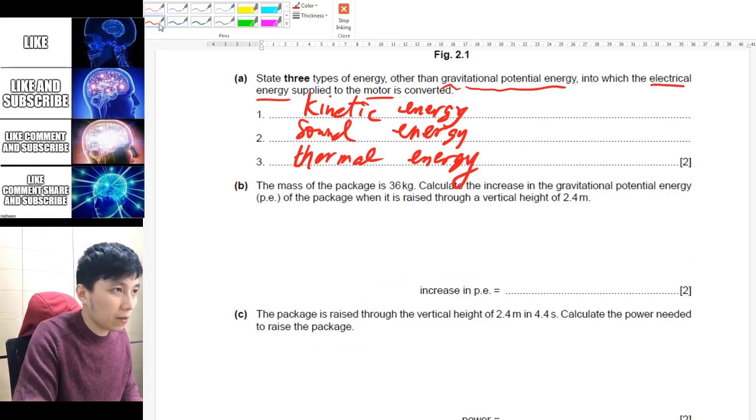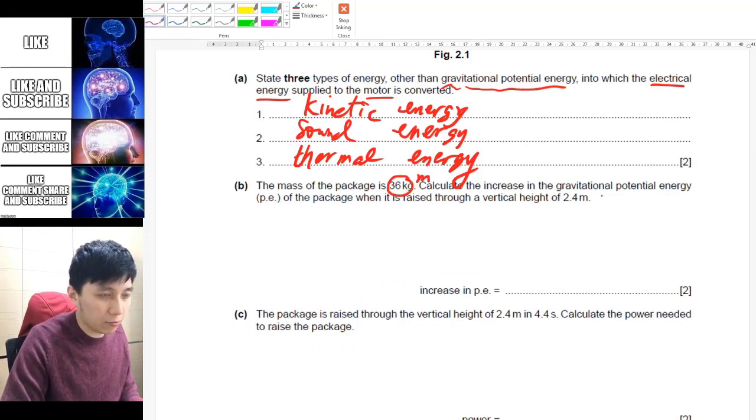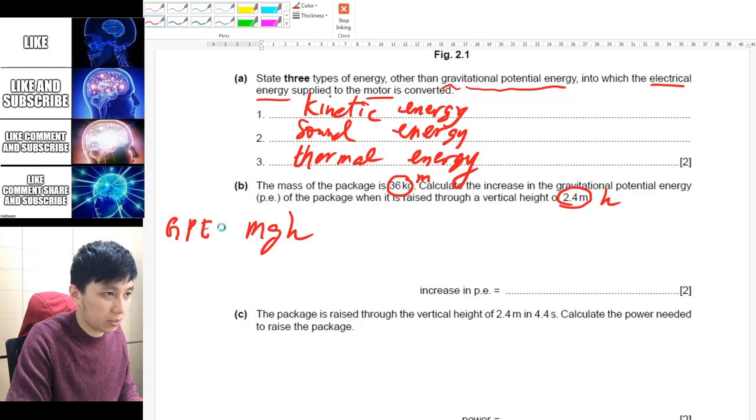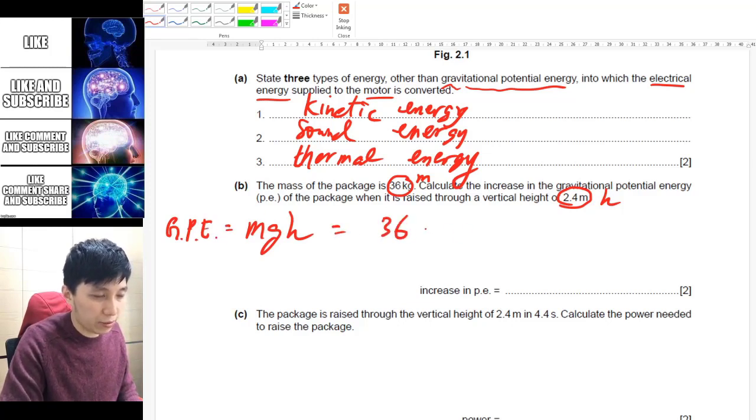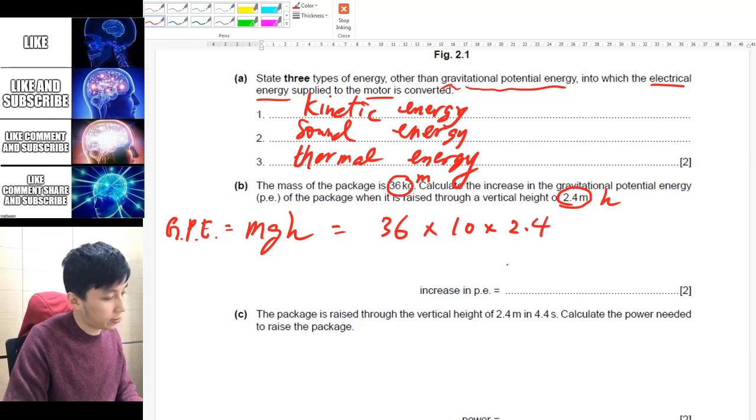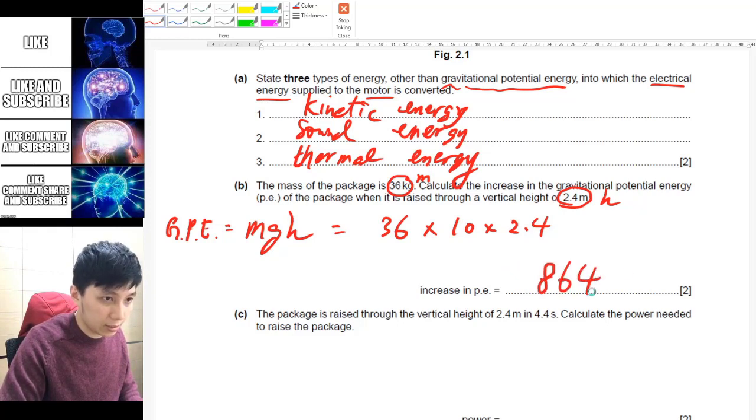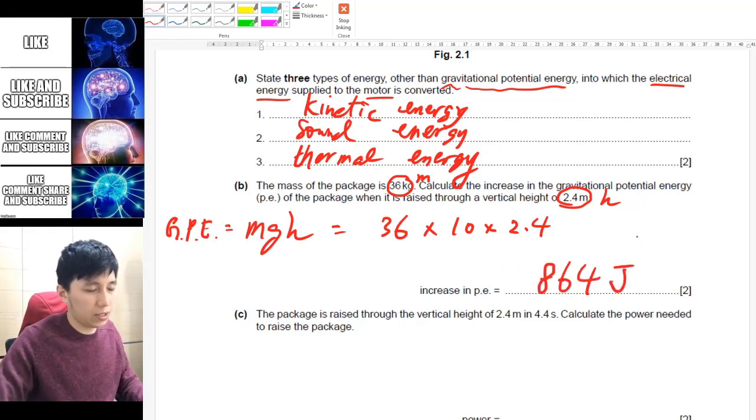Part b, so it provides you the mass, I'll write m next to it. Calculate the GPE when you move through this height h, so I think it's very obvious that you have to use the equation mgh, which is GPE, gravitational potential energy. And so we have got mass to be 36, g you should take it as 10, if you calculate using your calculator, so the answer should be 864, again the unit should be in joule.